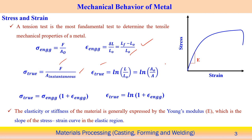We can find out the relation also. True stress is basically engineering stress into (1 plus engineering strain). This way we can relate between the true stress and engineering stress. Similarly, true strain and engineering strain can also be related as logarithm of (1 plus engineering strain). This is the expression for the true strain. I am not going into much detail of how we can evaluate this value because this is very standard practice — the derivation I am eliminating — but this is the way we can look into this.